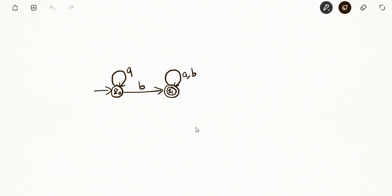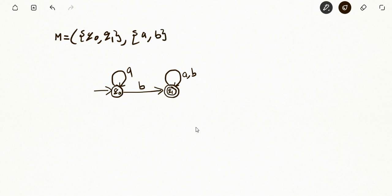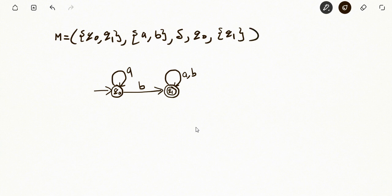This DFA has been given — you can see here. If we want to represent it as a 5-tuple, the states are q₀ and q₁. The input alphabet has a and b. Delta has been defined by this transition diagram. q₀ is the initial state and q₁ is the final state. Now we want to generate the grammar for this DFA M, so we have to construct G.